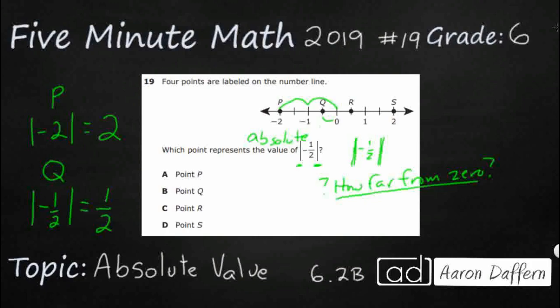Then we've got R here. R is positive one-half because that's right there between zero and one. The absolute value of positive one-half is one-half. If I took the absolute value of negative one-half and positive one-half, they both end up as positive one-half.